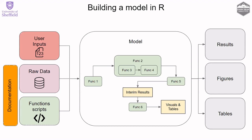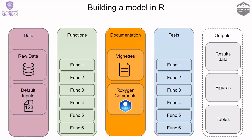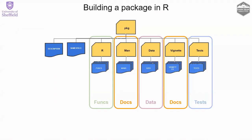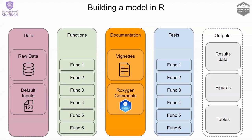By the time we've done this in R with our documentation of functions and data, our file structure might look like this: a folder containing raw data and default inputs, a folder containing all model functions, a folder for documentation, a folder containing tests to make sure our functions are operating as expected as we develop our model, and optionally a folder containing outputs — since you can always run the model to regenerate those.